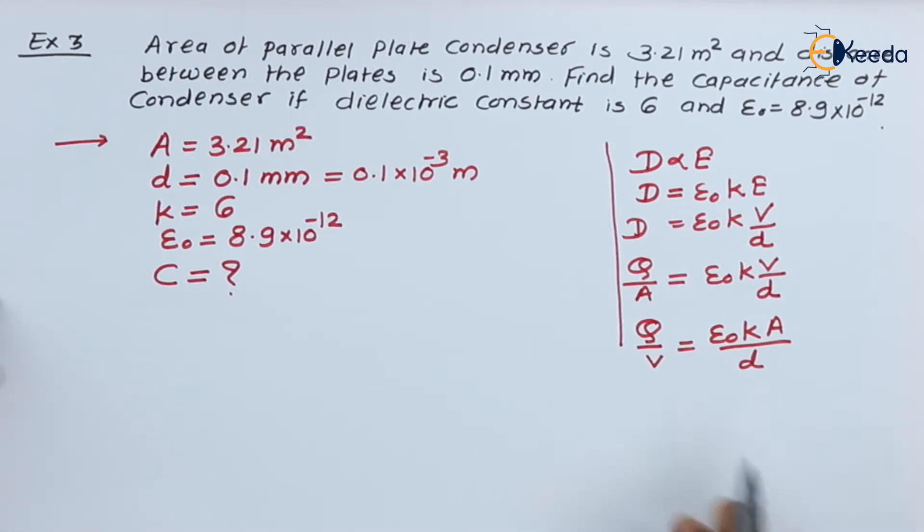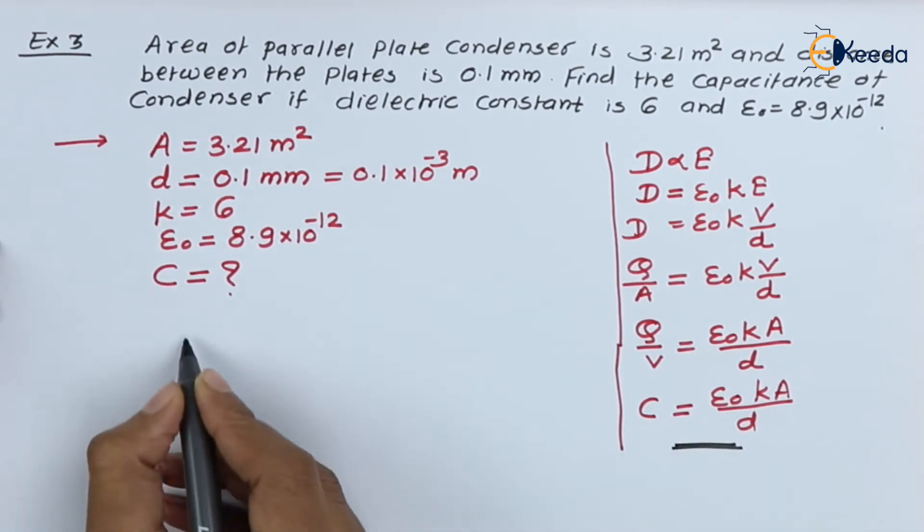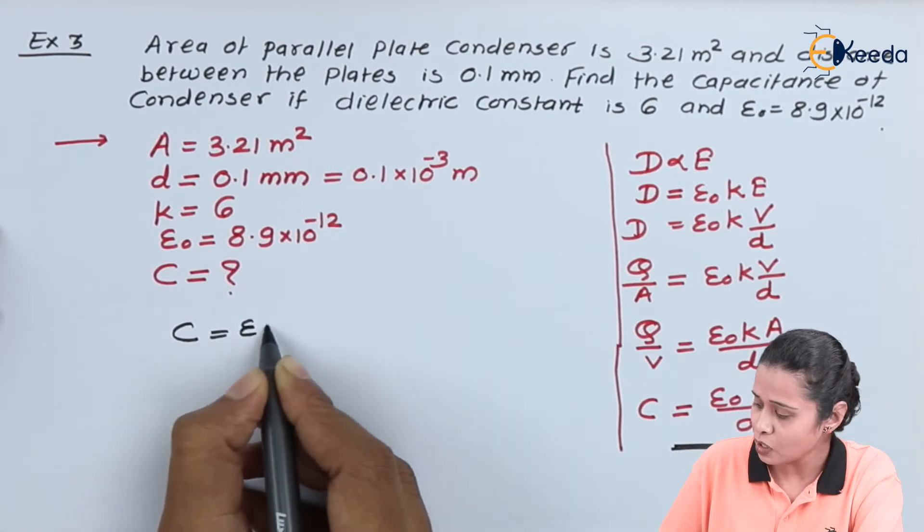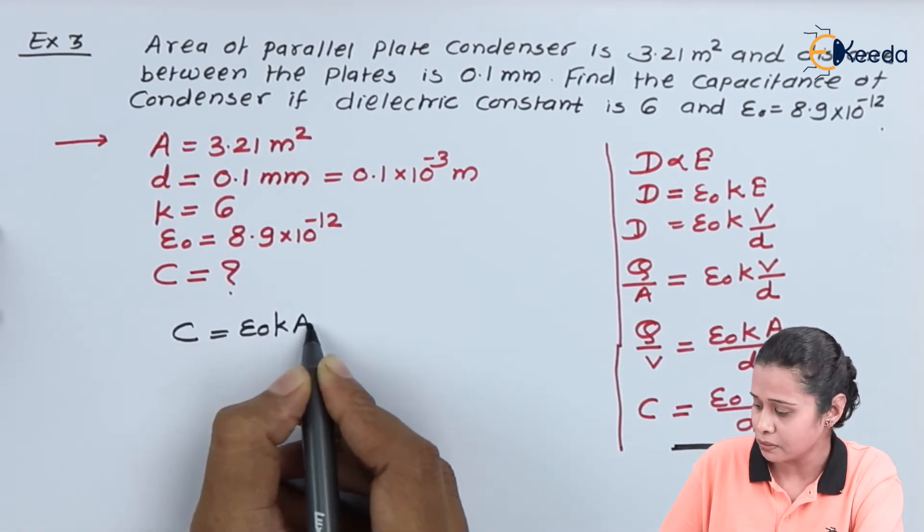So here we have C is equal to epsilon naught k A by d. Now this is the equation which we are going to use to solve this numerical, so we have a formula that C is equal to epsilon naught k A by d.